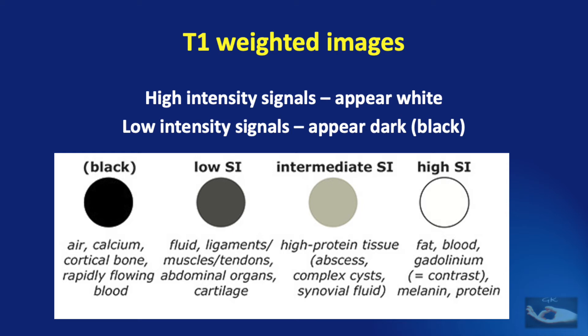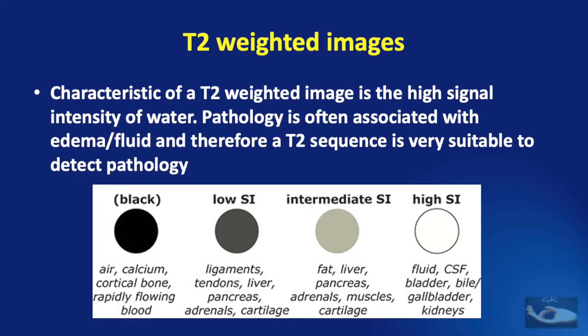Ganglia, which contain high protein tissue, will show up as low to intermediate signals on T1 weighted images. On the other hand, T2 weighted images are characterized by high signal intensity of water. Pathology is often associated with edema or fluid, so T2 sequences are very suitable to detect pathology. High intensity on T2 weighted images is seen with fluid, CSF, bladder, or anything containing water or edema. Low intensity on T2 weighted images is seen with air, calcium, cortical bone, or rapidly flowing blood, appearing as dark areas.